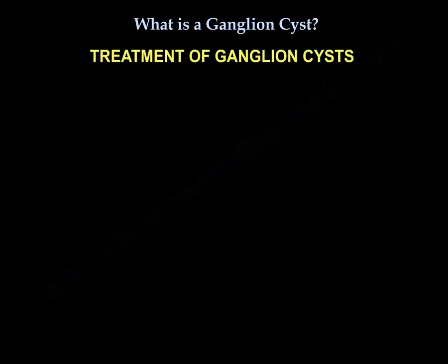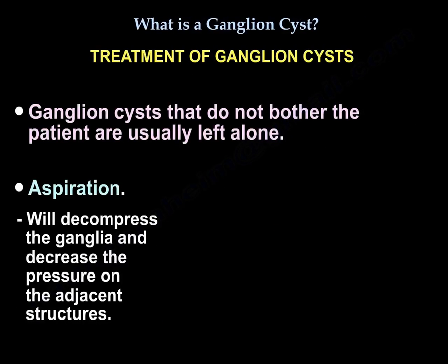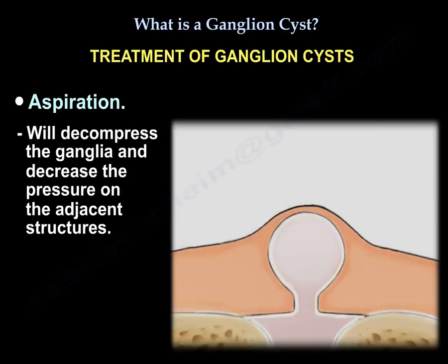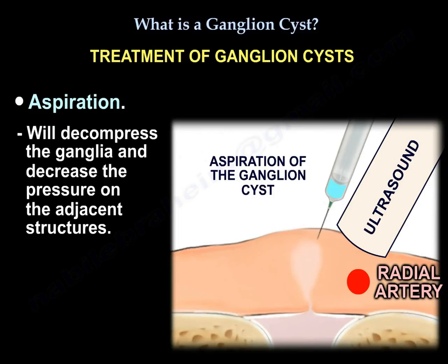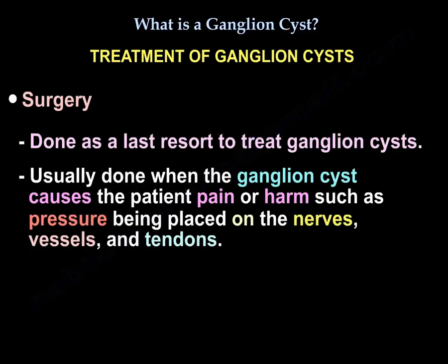In terms of treatment, ganglion cysts that do not bother the patient are usually left alone. Aspiration is one method to treat ganglion cysts; it will decompress the ganglia and decrease the pressure on the adjacent structures. Surgery is the last resort in treating ganglion cysts and is usually done when it causes the patient pain or harm, such as pressure on the nerves, vessels, and tendons.